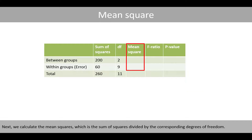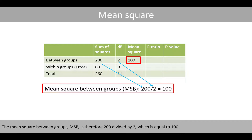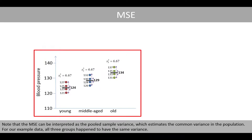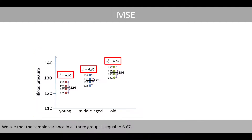Next, we calculate the mean squares, which is the sum of squares divided by the corresponding degrees of freedom. The mean square between groups, MSB, is therefore 200 divided by 2, which is equal to 100. The mean square within groups, also called the mean square of error, MSE, is approximately equal to 6.67. Note that MSE can be interpreted as the pooled sample variance, which estimates the common variance in the population. In our example, all three groups happen to have the same variance of 6.67. Since the sample size is the same in all three groups, we can simply take the average of the three sample variances to calculate the pooled sample variance.